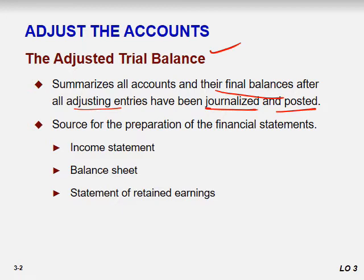The adjusted trial balance is made after adjusting entries, which first go through the journal and then the ledger. The adjusted trial balance basically acts as a source for preparation of the final statements: the income statement, balance sheet, and statement of retained earnings.